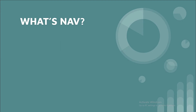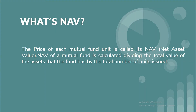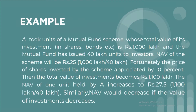Now let us discuss what is NAV — net asset value. NAV is used to measure the performance of a mutual fund. The price of each mutual fund unit is called its NAV. NAV is obtained by dividing the total value of the mutual fund scheme by the total number of units issued.